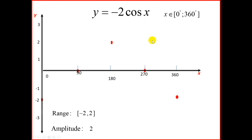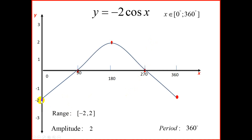Looking at the curve on screen, the range is from negative 2 (minimum) to positive 2 (maximum). The amplitude of this graph from the midline to the top is 2 units, and the period for one complete cycle is 360 degrees. Notice that the number in front of cos affects the amplitude of the graph — here the amplitude is 2.